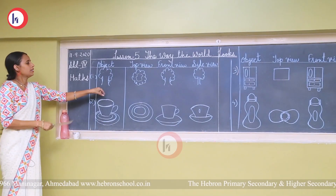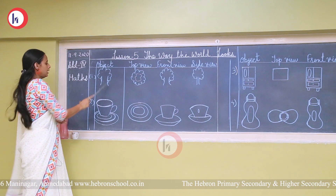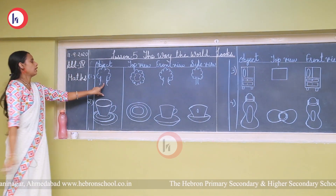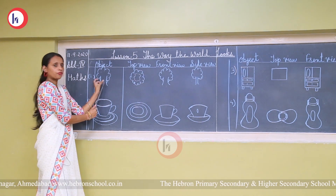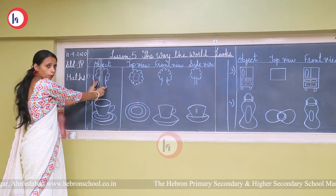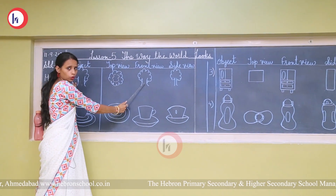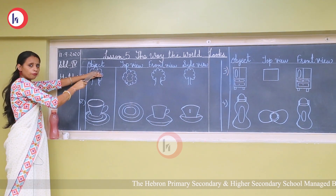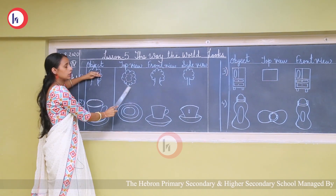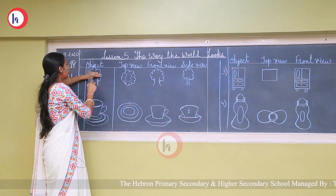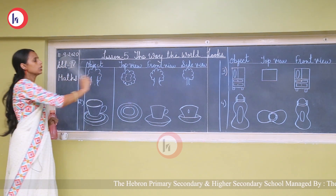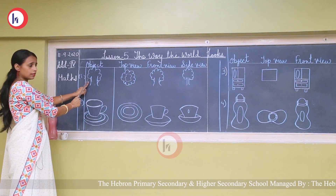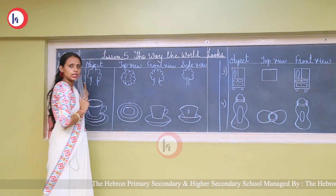So students, there are four objects: tree, cup saucer, almira, and water bottle. Let's take the first example — the tree. If we see from the front side, we can see that portion, so this is the front view. If we see from the top side, that is the top view — we have drawn only the top side. Then the side view: from both sides, we can see the side view.